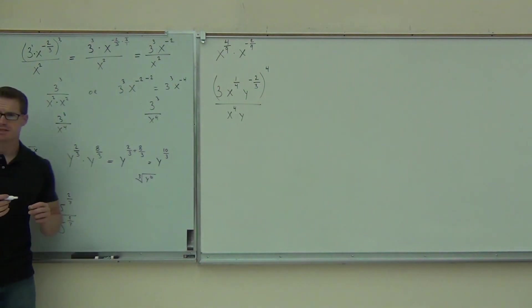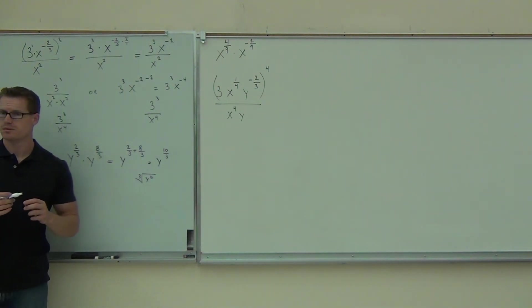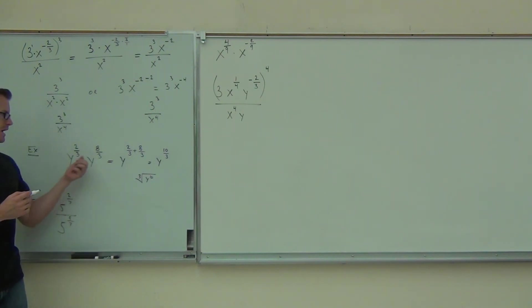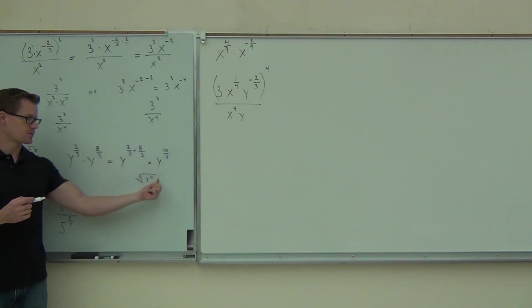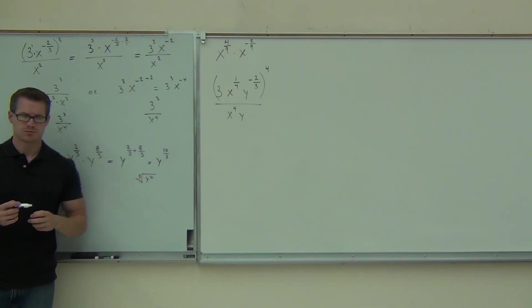Did you get y to the 10 thirds on your paper for the first one? Or cube root of y to the 10? We add those — we get the 8 plus the 2. We have a common denominator already. We get 10 thirds, cube root of y to the 10.